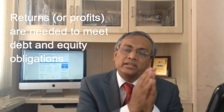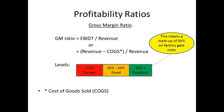ROCE comes only when another ratio is sound and effective — that is called the gross margin ratio. Gross margin ratio is EBIT divided by revenue, meaning earnings divided by total revenue or total sales. It is given by the formula: revenue minus COGS (cost of goods sold), divided by revenue. There are no fixed standards, but if you get 33% and above on a gross margin ratio it's excellent; 25 to 33% is okay; and less than 25% is dangerous.